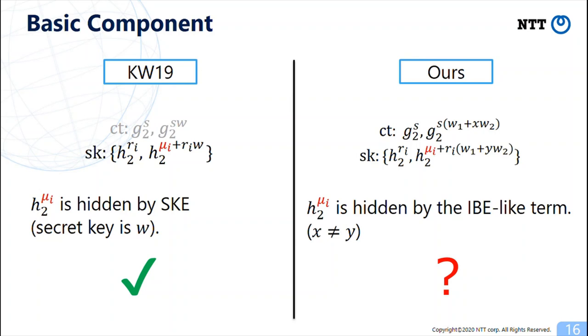Note that we omit the NIBE term in this slide for simplicity. Then, what will happen in 1-ABE in our case?